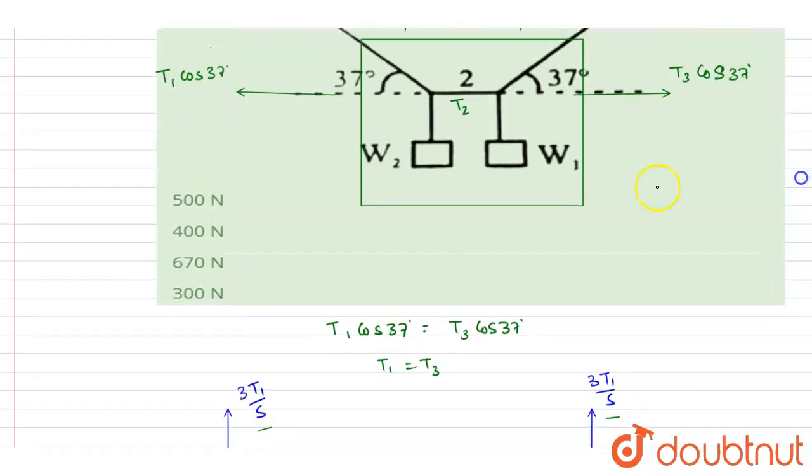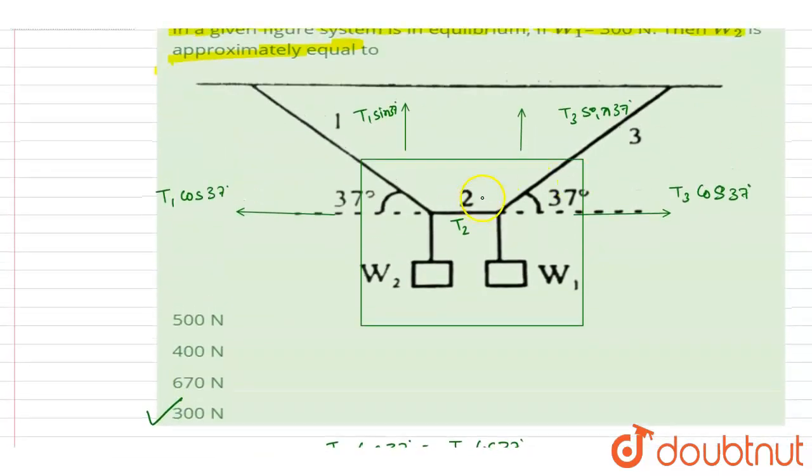You can also do it by symmetry. If the masses were unequal, then the angles would not be the same. As you can see here, they are the same, so by symmetry also you will get the same.